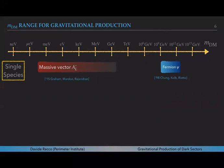Another scenario that was studied more recently in 2015 by Graham, Mardon and Rajendran is the one of the longitudinal degree of freedom for a massive vector. If you have a massive vector then it can be substantially produced during inflation.